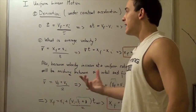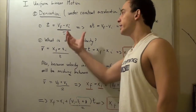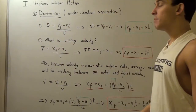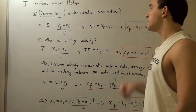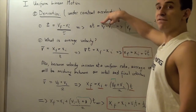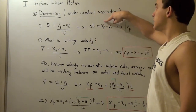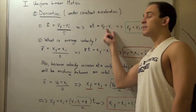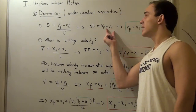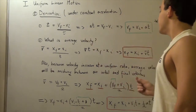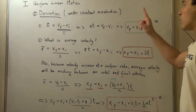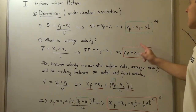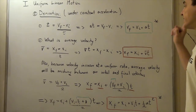Taking t in the denominator and bringing it to the other side, we get: acceleration times time equals final velocity minus initial velocity. Bringing initial velocity to the other side gives us our first kinematic equation: v final equals v initial plus acceleration times time.